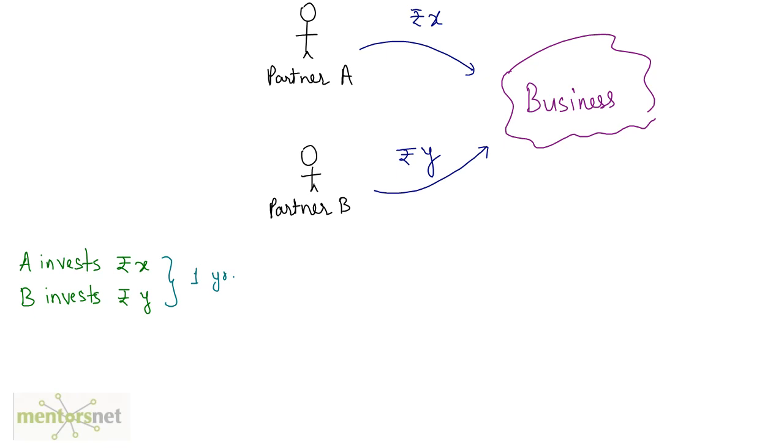In other words, if I write it, I can write it as the ratio of A's profit to B's profit is equal to the ratio of the money they invested. And this what we wrote is nothing but the proportion. The proportion is such that the ratio of profits of A and B is in proportion with the ratio of the money they invested in.